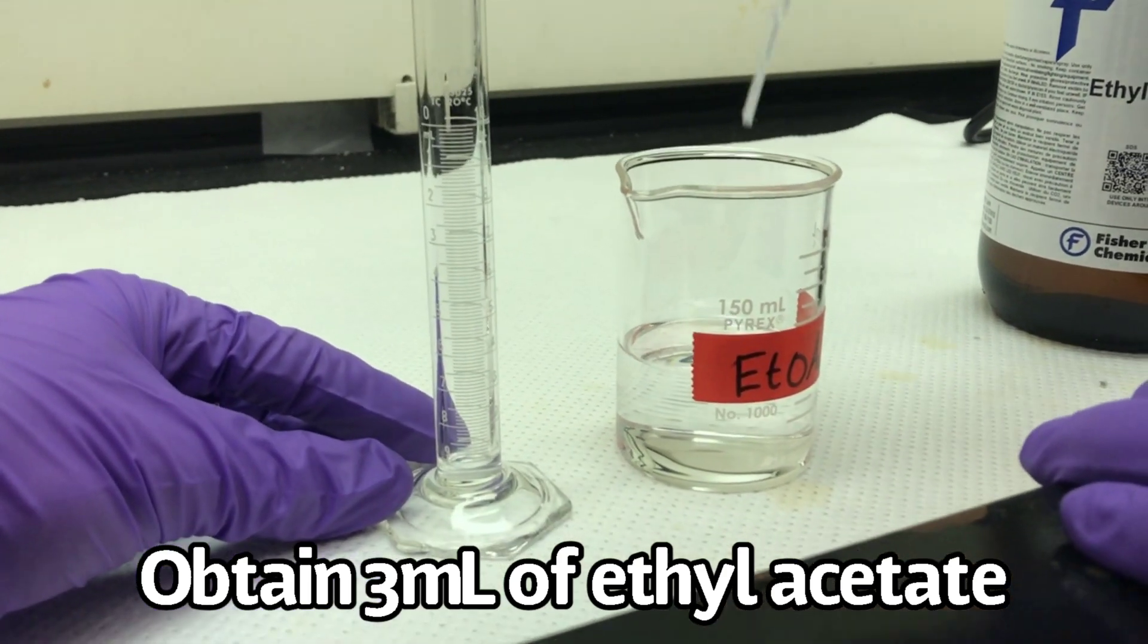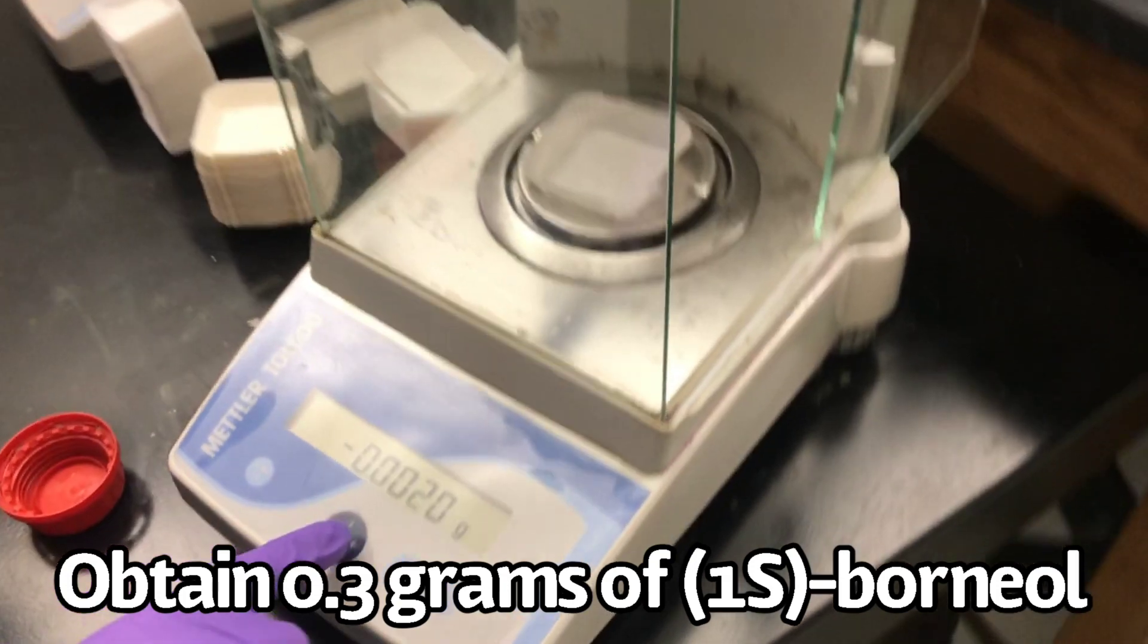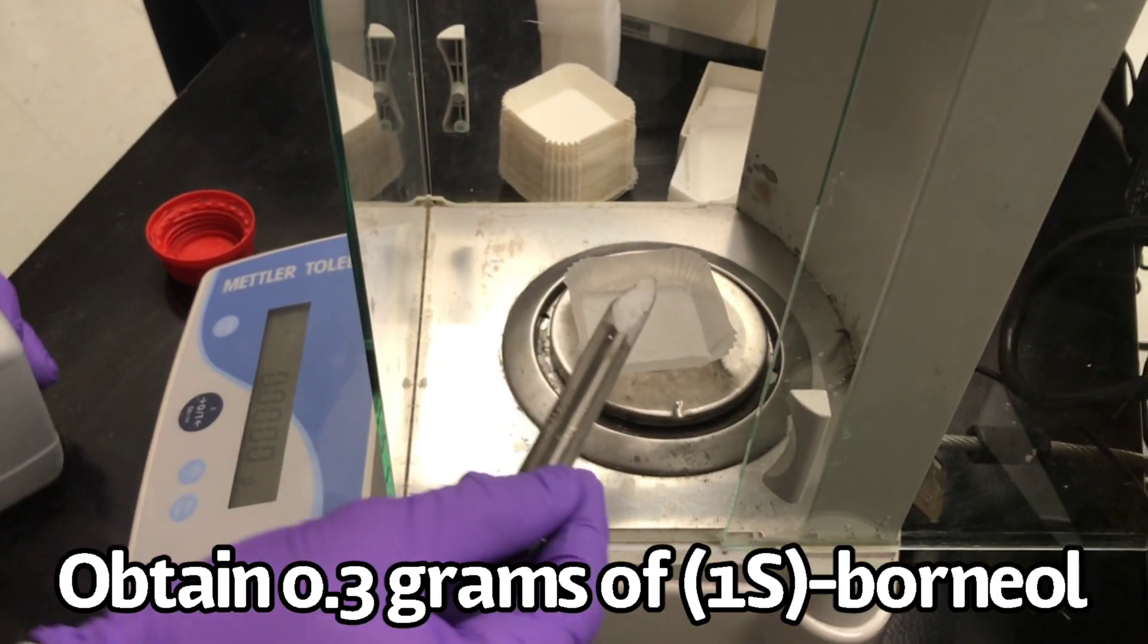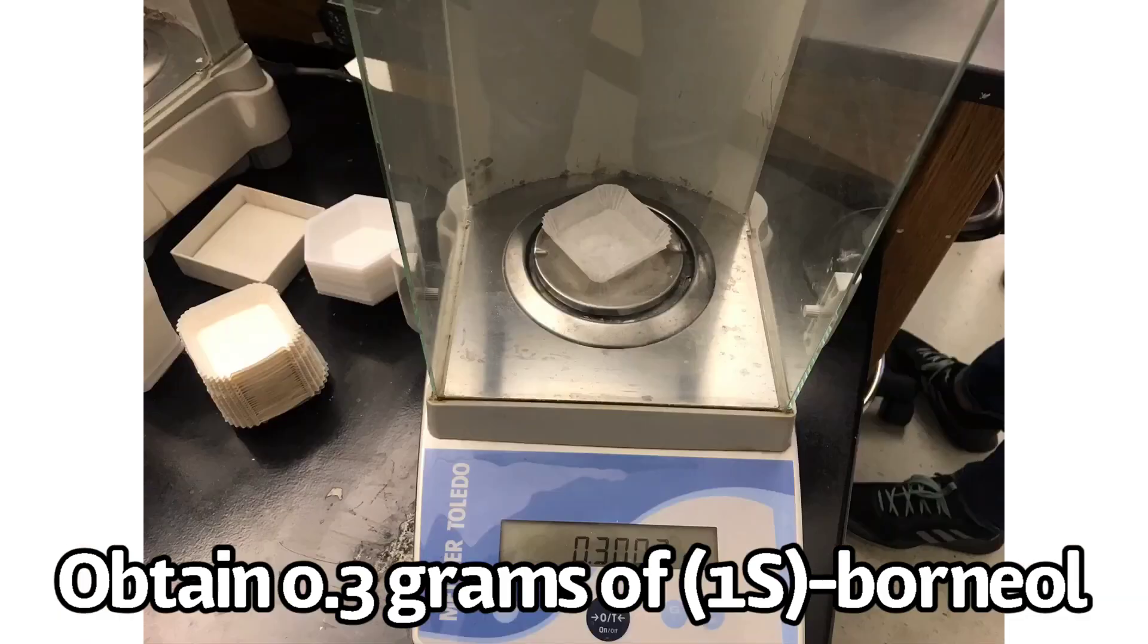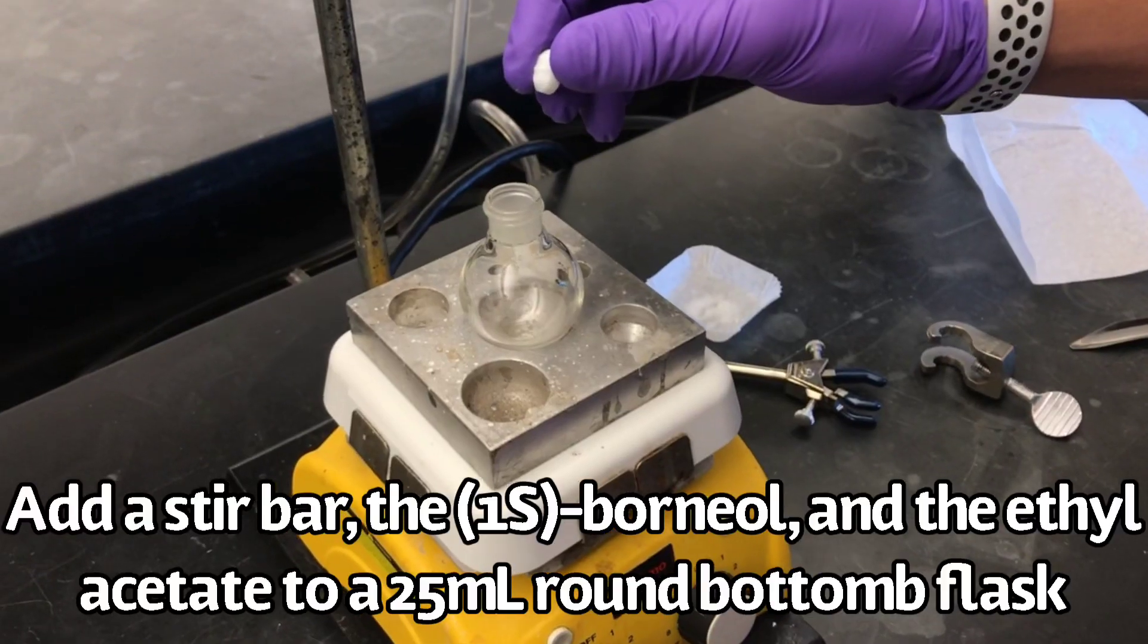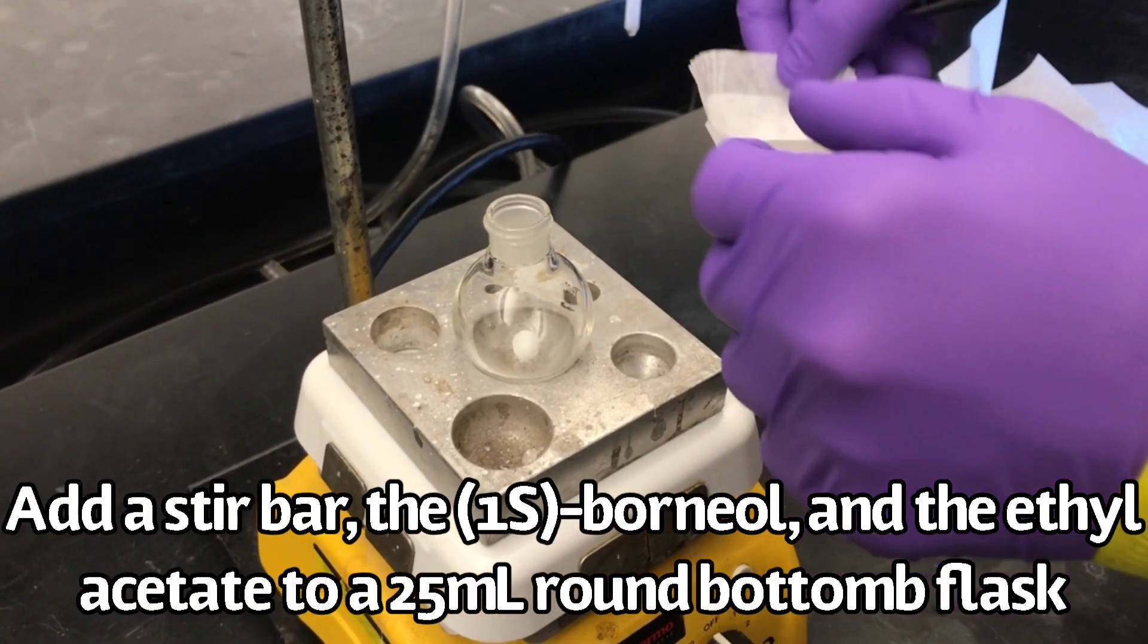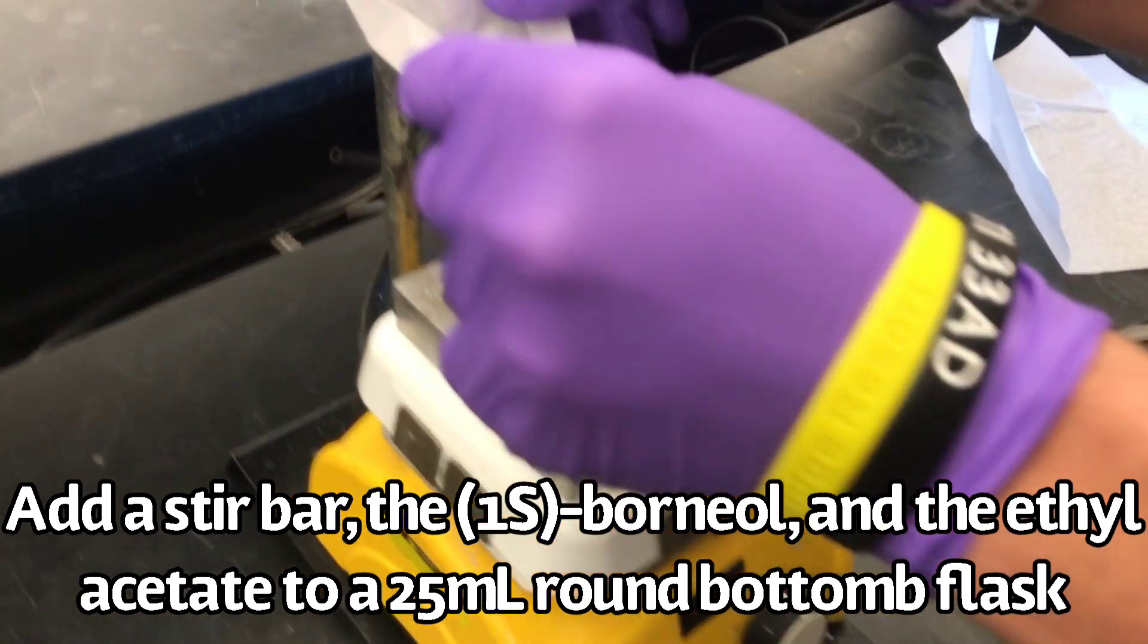Start by obtaining 3 milliliters of ethyl acetate. Next, obtain 0.3 grams of the S-enantiomer of borneol. Add a stir bar, the S-enantiomer of borneol, and your ethyl acetate to a 25 milliliter round bottom flask.